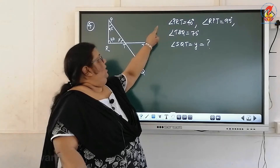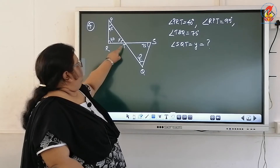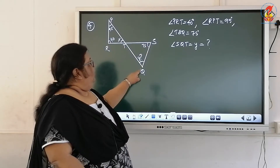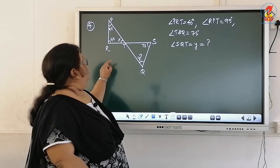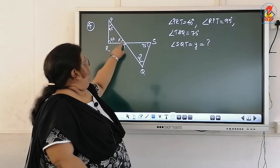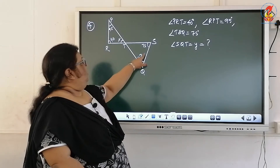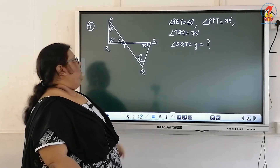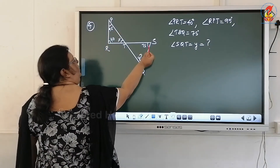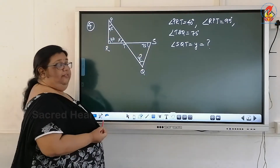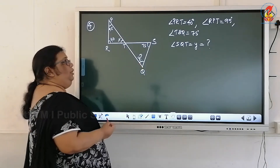Angle PRT is given as 40 degrees. Angle TSQ is given as 75 degrees. Angle RPT is given as 95 degrees. You need to find angle SQT. The measurements of angle P, angle R, and angle S are given. You need to find angle Q.